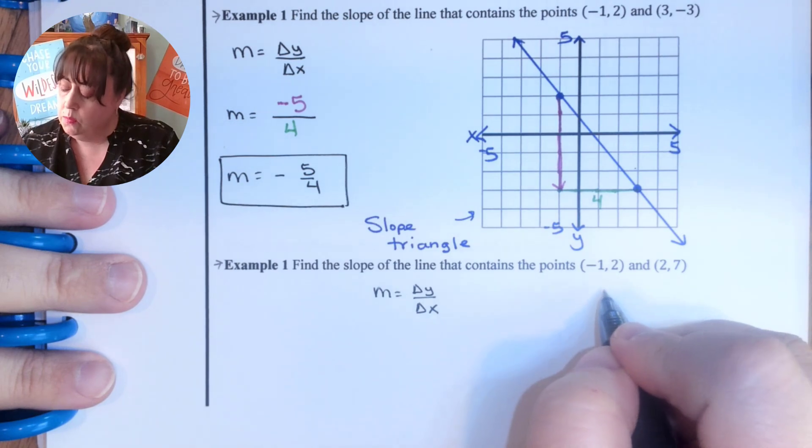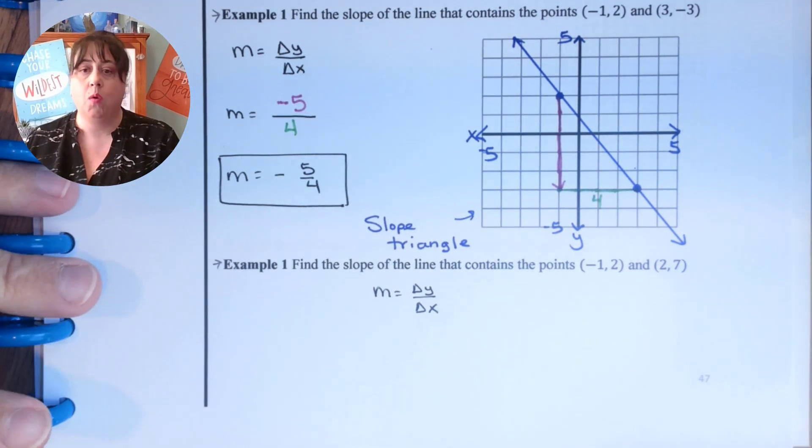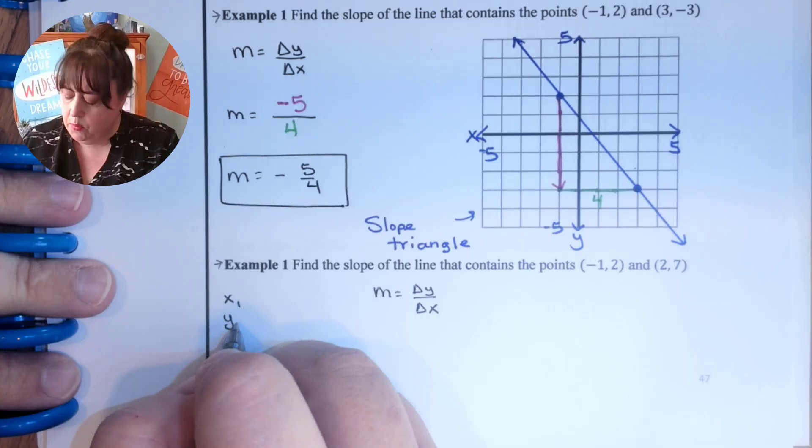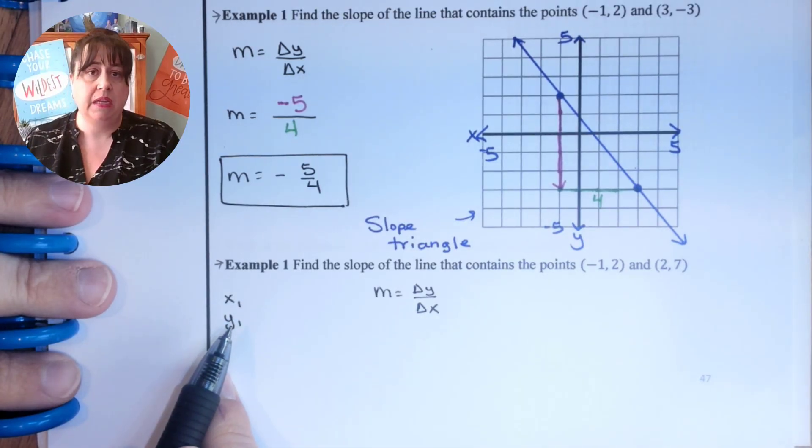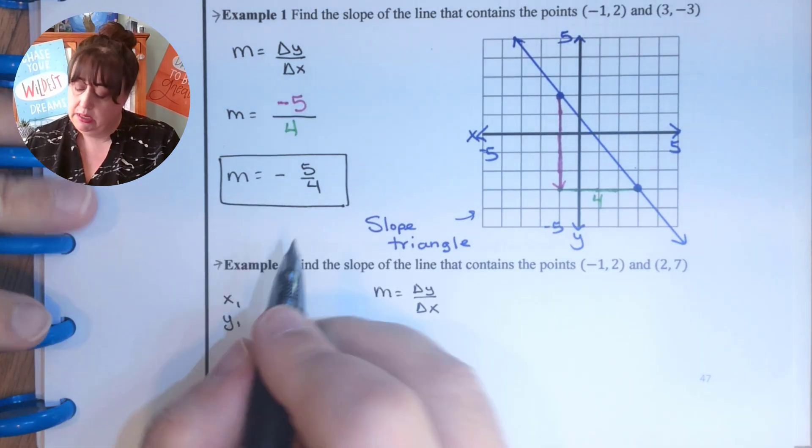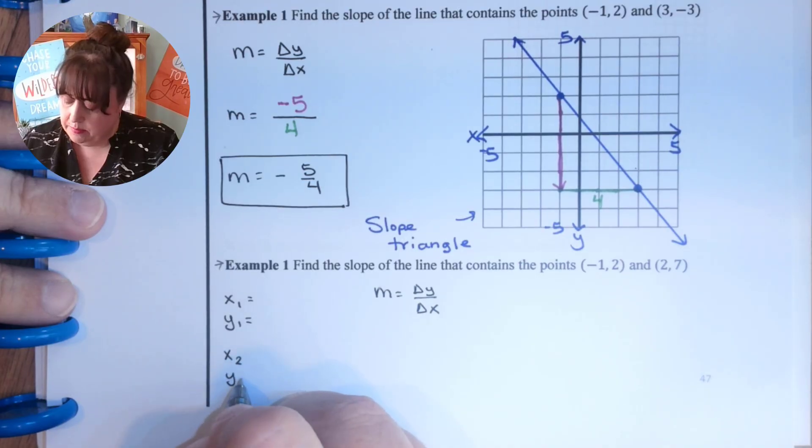So we're going to talk about our coordinates like this: x sub one and y sub one. The subs mean from the first coordinate. X sub two and y sub two means the points from the second coordinate.